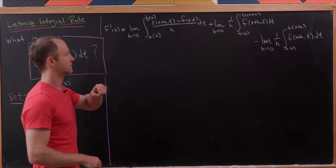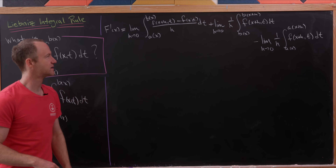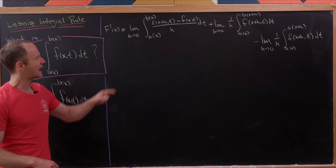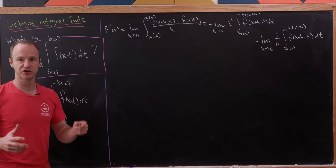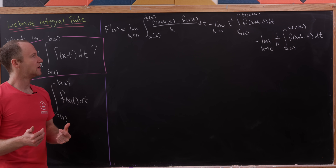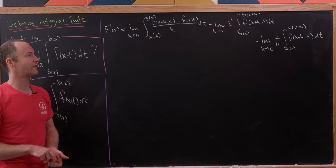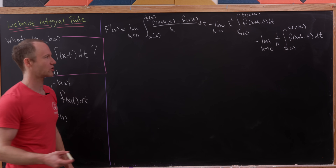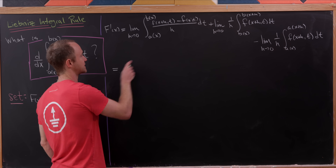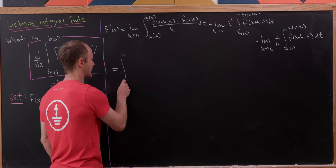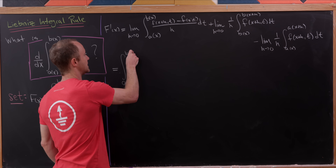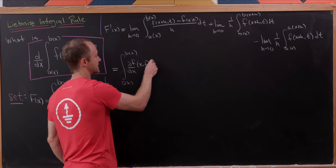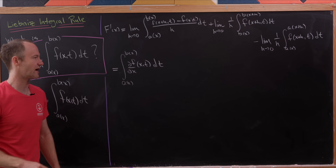Focusing on the first limit: we have the limit as h goes to zero of the integral from a(x) to b(x) of f(x+h, t) minus f(x, t) over h. If we bring that limit inside the integral — which we're allowed to do — we get simply the partial derivative of f with respect to x inside that integral. It's just the limit definition of that partial derivative. So the first integral becomes the integral from a(x) to b(x) of ∂f/∂x(x, t) dt.